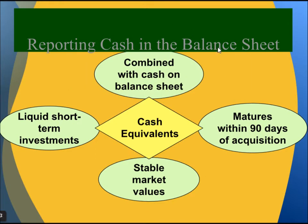How do we report cash on the balance sheet? Combined with cash on the balance sheet are liquid short-term investments that mature within 90 days of acquisition and have a stable market value. All of these are cash equivalents because they are short-term investments maturing in 90 days and are considered liquid cash available at any point in time.